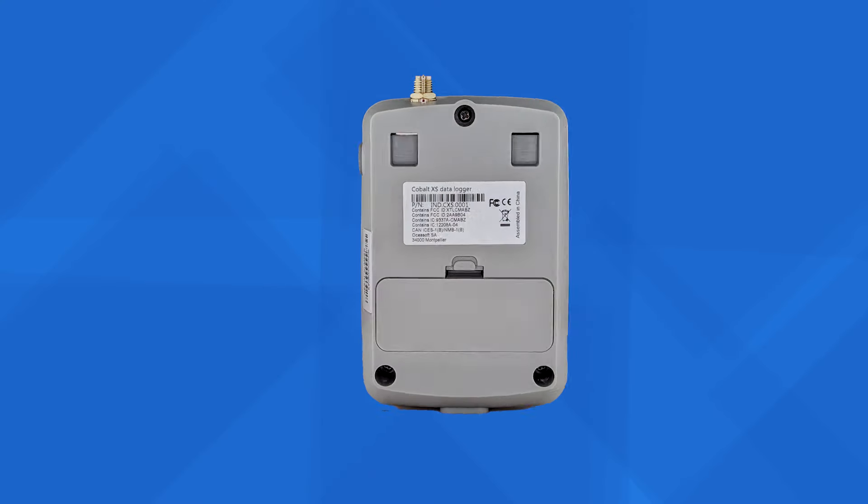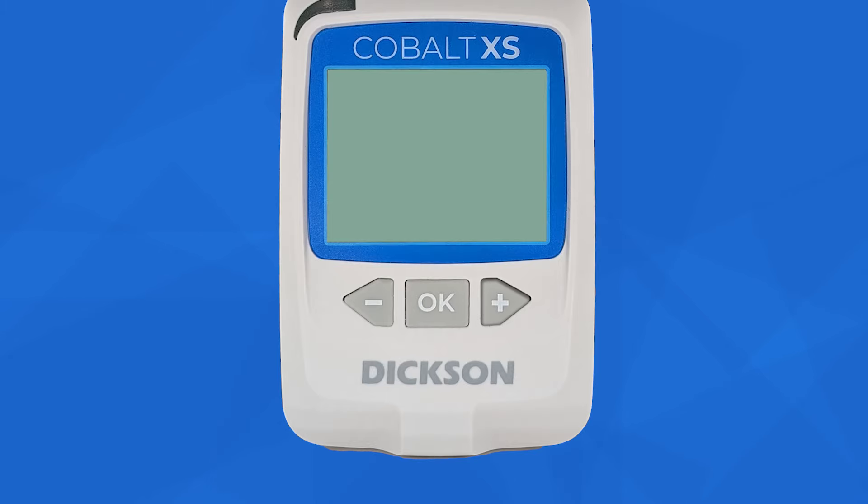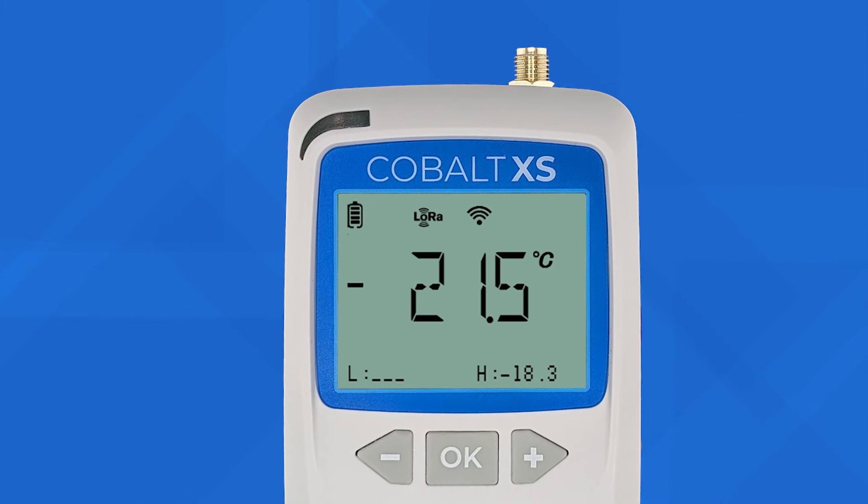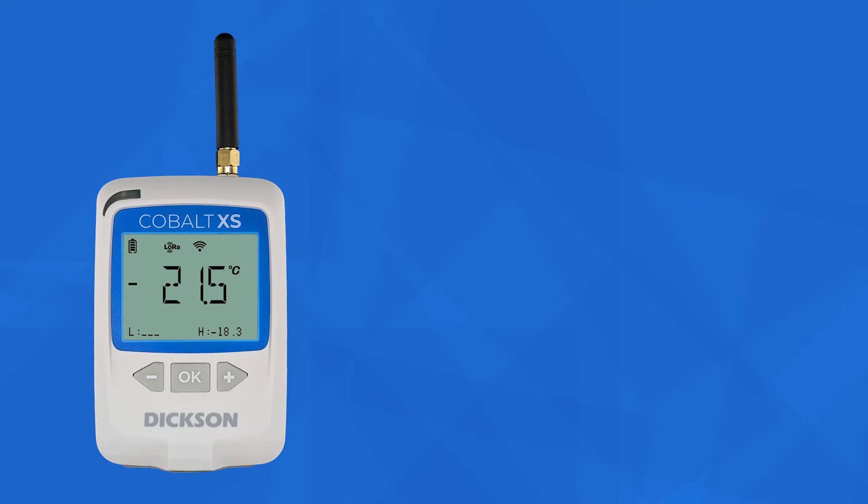The Cobalt XS features easy-to-use push-button interface, easy-to-read LCD, visual alarm indicators, and LoRaWAN Wireless Connectivity.